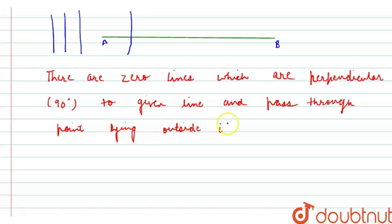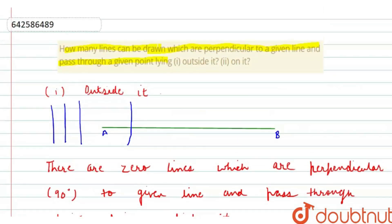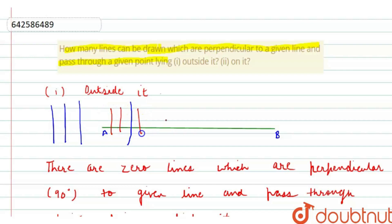Now we have to find the number of perpendicular lines for the second part, that is, for a point on the line. If we are talking about line segment AB, there are infinite lines — this is perpendicular, this is perpendicular, this is perpendicular, this is perpendicular. There are infinite lines.